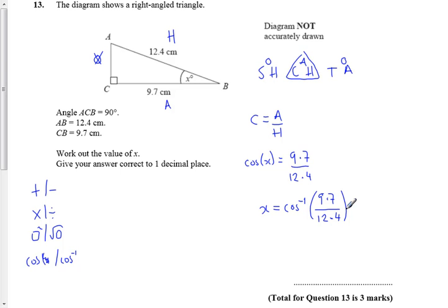So, sorry, I just tapped a button wrong on my calculator. 9.7 divided by 12.4 equals shift cosine,